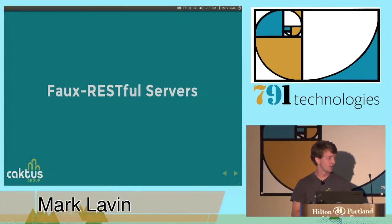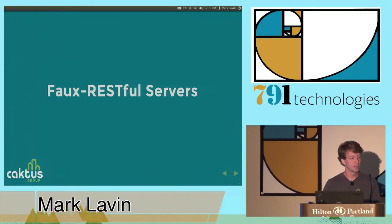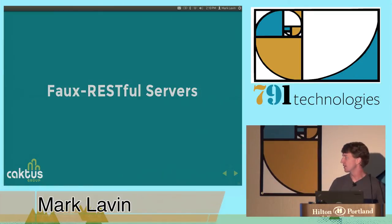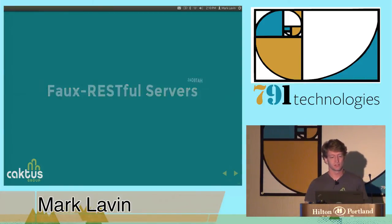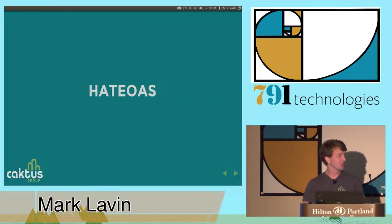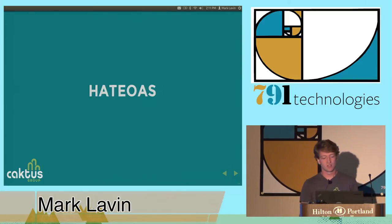A big challenge for clients is servers — in particular, servers that really don't meet all of the constraints that are necessary. In particular, the uniform interface constraint defines the concept of hypermedia as the engine of application state, usually shortened to HATEOAS. It's not usually implemented in a way that's helpful for the client, and there's debate as to whether it's necessary or helpful. I will tell you it is helpful, and I will show you how.